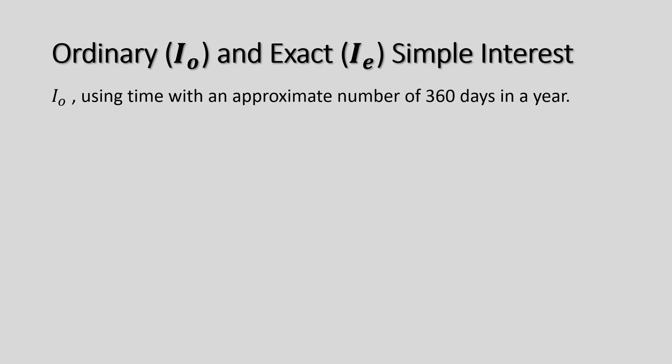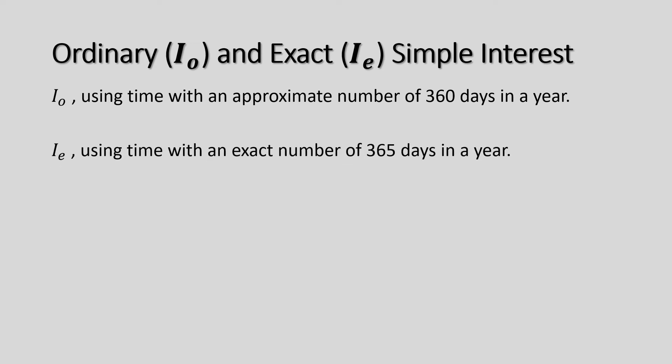The ordinary simple interest uses time with an approximate number of 360 days in a year, while for the exact simple interest, we use time with an exact number of 365 days in a year.